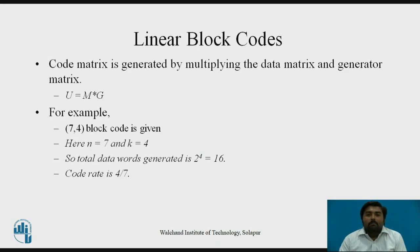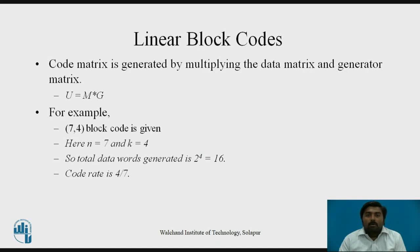Let us see an example. For a linear block code of (7, 4): 7 is n, the length of the code word, and 4 is k, the length of the data word. The total number of possible data words is 2 raised to 4, which equals 16. The code rate is k by n, which is 4 by 7.